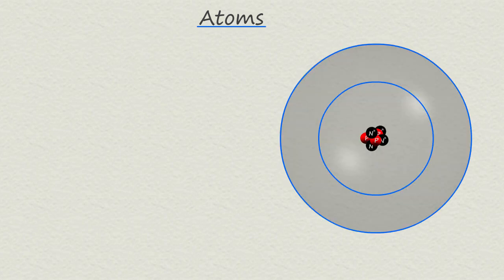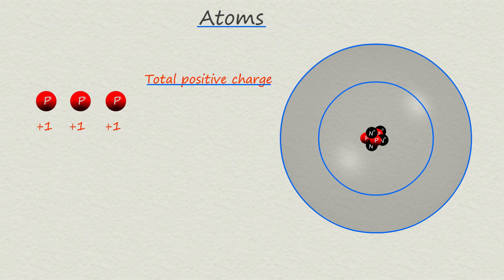The atom shown opposite contains three protons and four neutrons in its nucleus. Each proton has a charge of plus one, so the total positive charge in the nucleus due to the presence of these three protons is plus three. The neutrons do not have any charge.